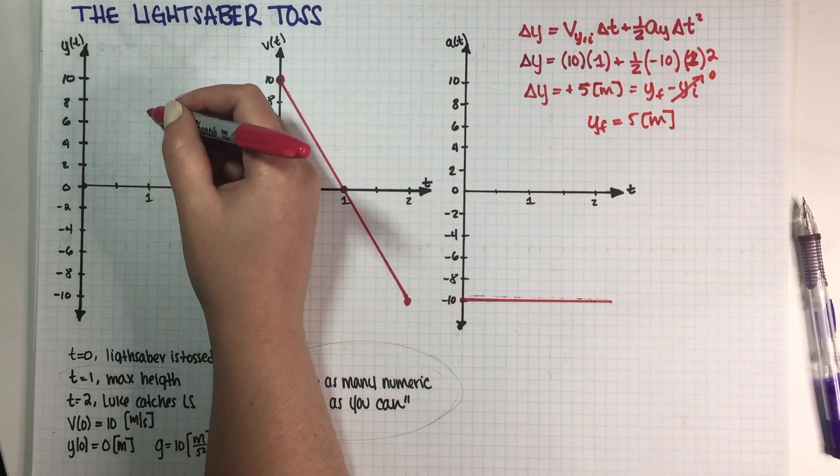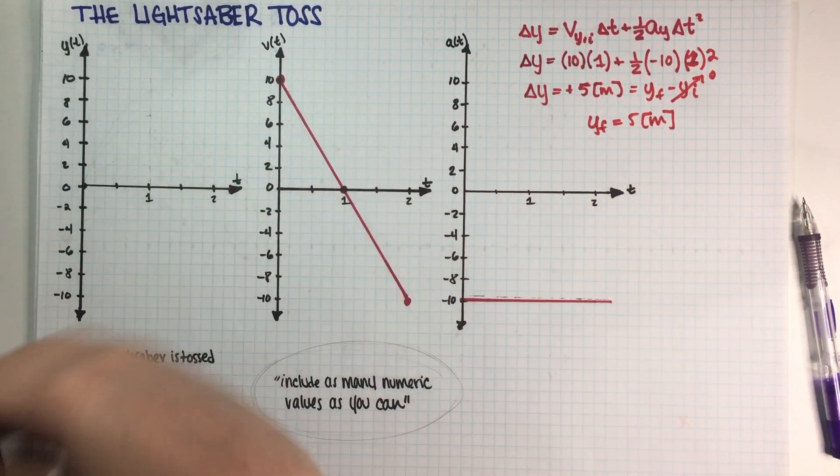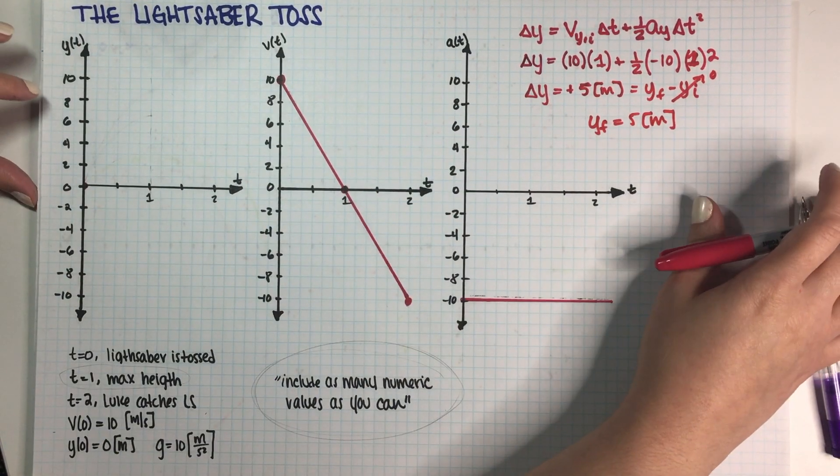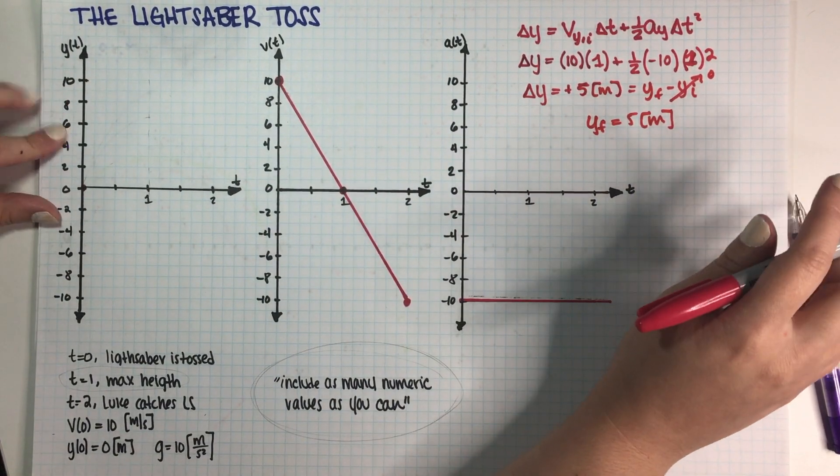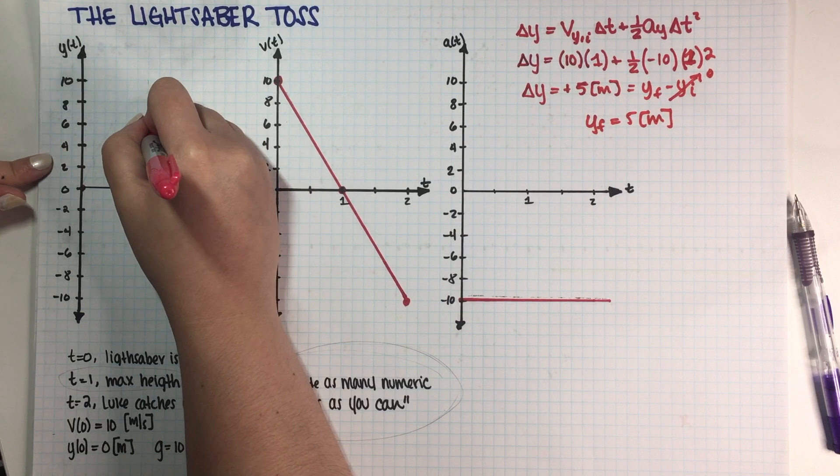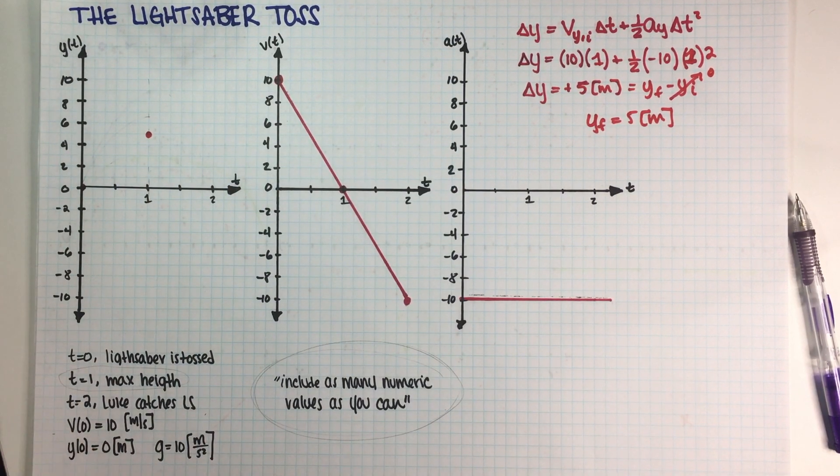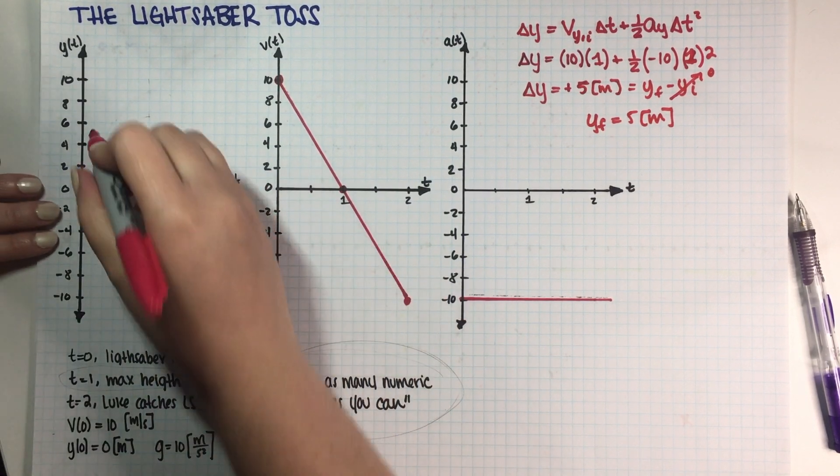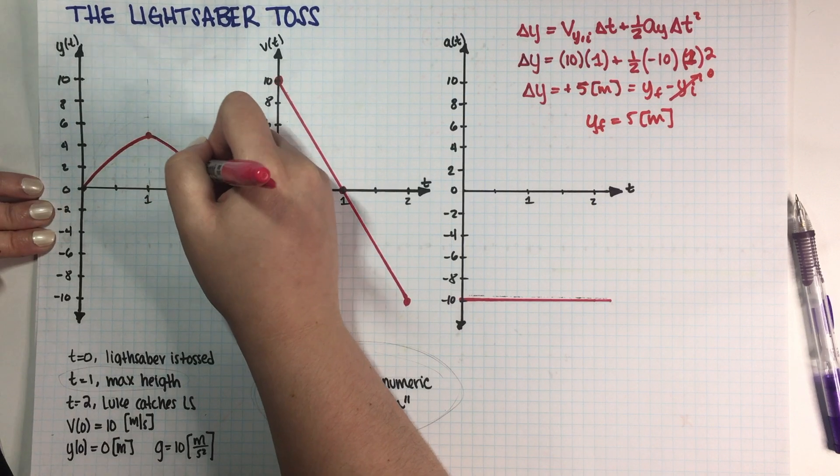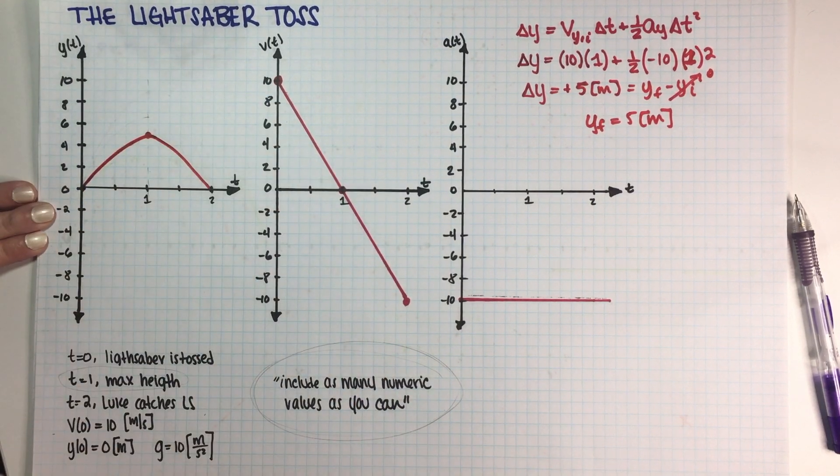So my maximum height is at 5. So now I know exactly what parabola I'm going to be drawing. So let's just go ahead and draw it, like this. And there we go.